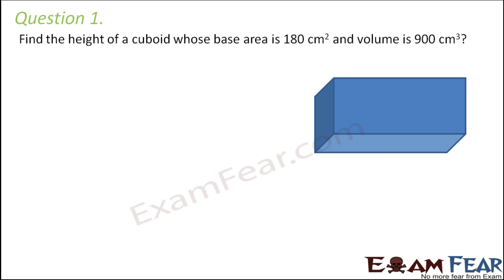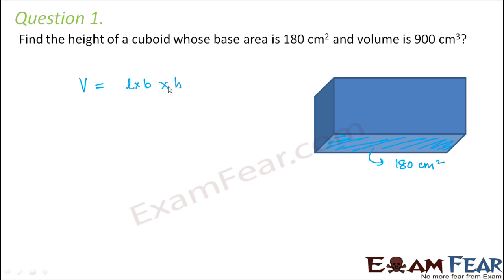Question number 1: Find the height of a cuboid whose base area is 180 cm² and volume is 900 cm³. The base area of the cuboid is given as 180 cm² and the entire volume is also given. Now the base area, when multiplied by the height, gives the volume. Volume of a cuboid equals length × breadth × height, where length × breadth is nothing but the base area.